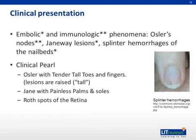When thinking about the skin and extremities, remember that Osler's nodes are tender lesions on the toes and fingers, whereas Janeway lesions are painless and found on the palms and soles. Splinter hemorrhages are small, linear lesions under the patient's nail beds. Roth spots are retinal hemorrhages.